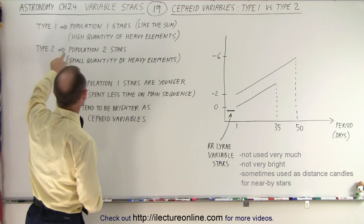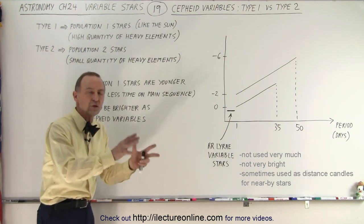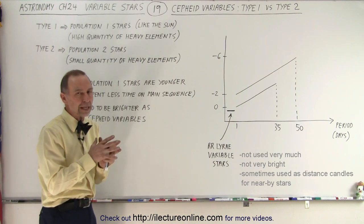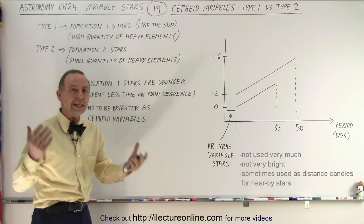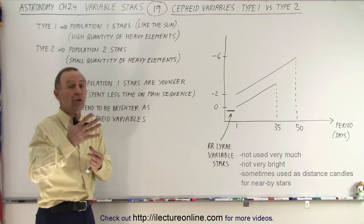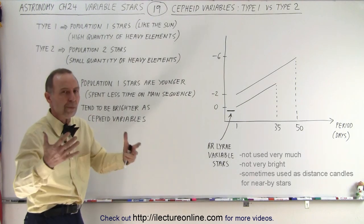Type 2 Cepheid variables came from population 2 stars. Now population 2 stars tend to be older stars and population 1 stars tend to be younger stars. And younger stars had more of an opportunity to accumulate heavy materials that were the leftovers from supernova explosions, where all those heavy elements were produced in those massive explosions.